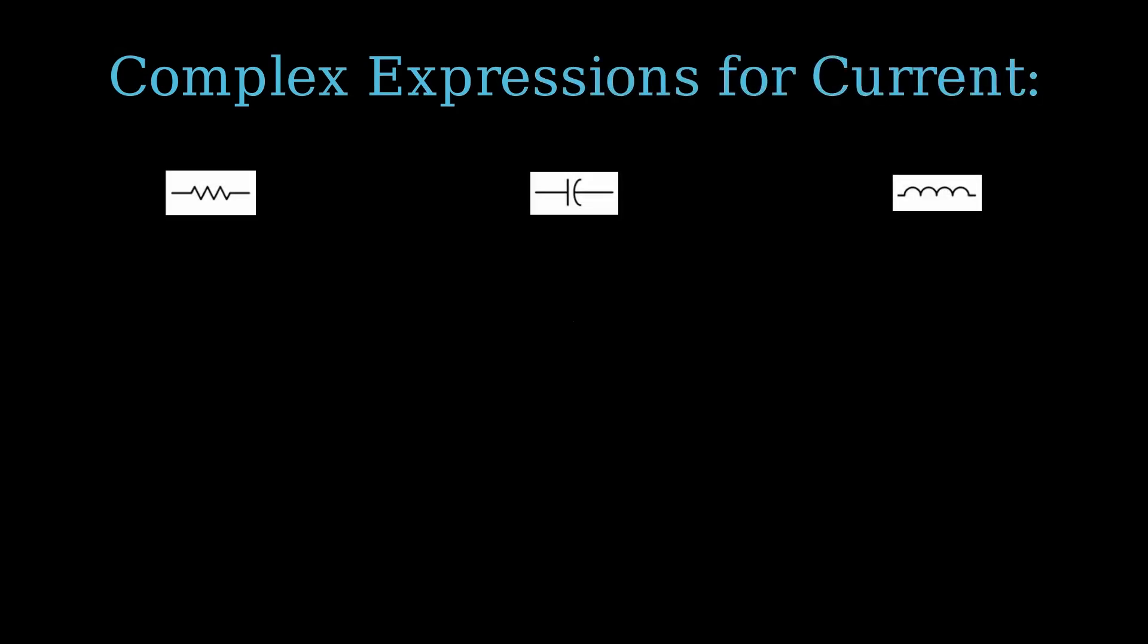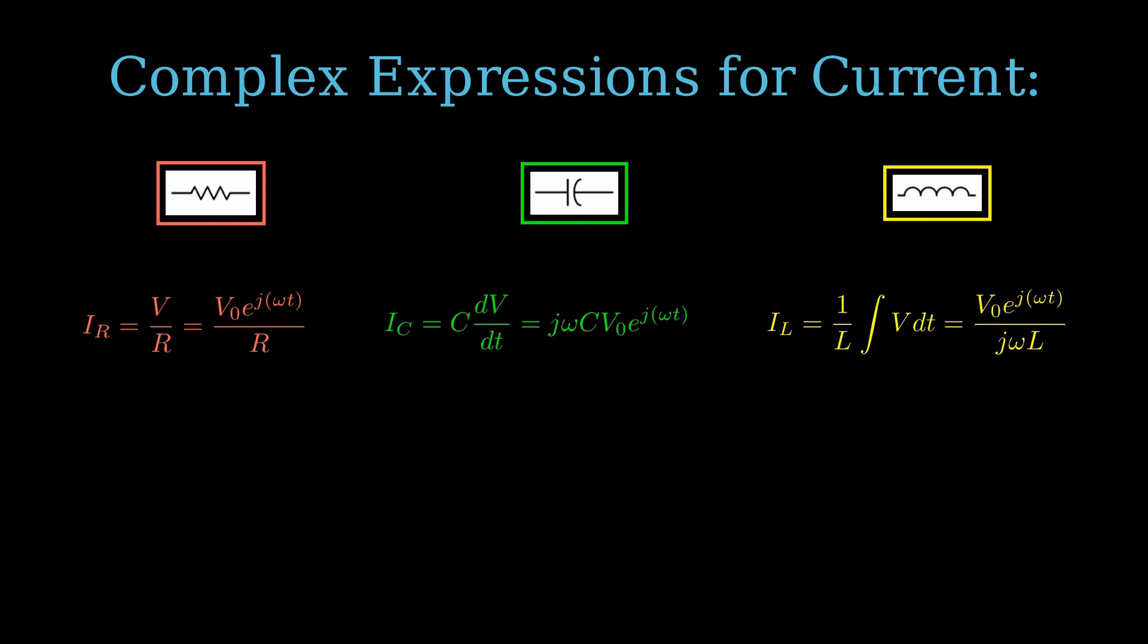So given our most used passive circuit components as shown above, we can solve for the current through a resistor, we can also solve for the current through a capacitor, as well as an inductor. I've completed the algebra and calculus in the expressions below for these values of current.